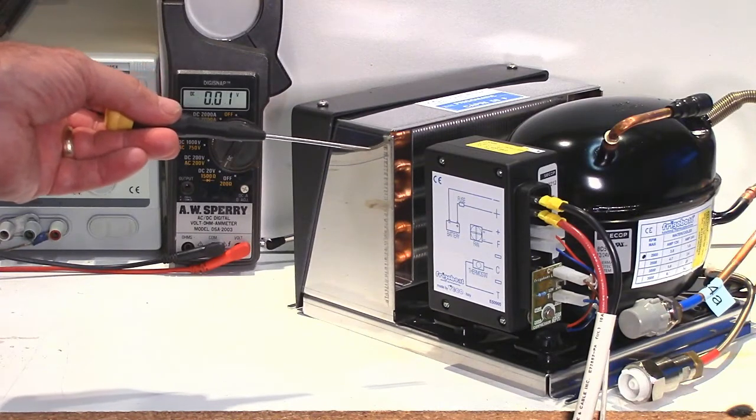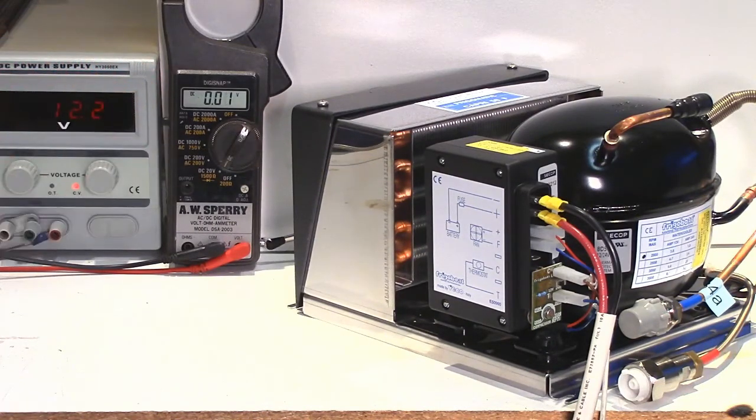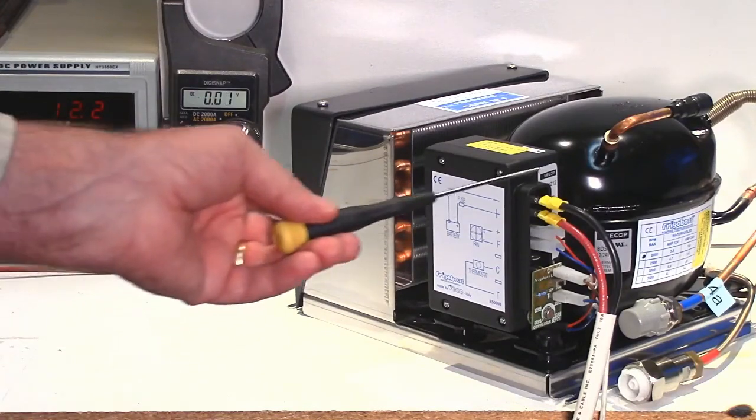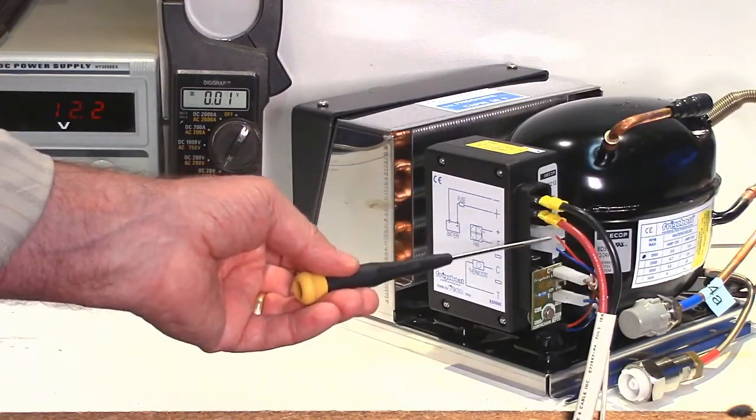We're going to be using this Capri 50 condensing unit from Frigiboat, air-cooled, to illustrate the effects of low voltage caused by thin wiring or high resistance connections, bad breaker, anything that could cause a problem between the battery and the connections of the power coming in to the controller right here.